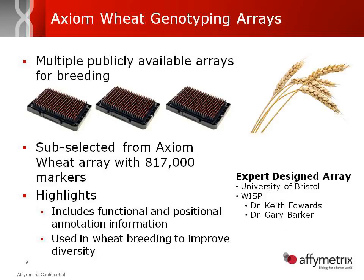The last array I want to talk about is the wheat array. There was a press release from Affymetrix with more details. This one was designed by the University of Bristol, and Dr. Parker will talk about it. It's an array with 817,000 markers. From this array, we will sub-select markers and take them into a high-throughput focused array with 384 arrays for breeding. These arrays will be available before the spring breeding season starts. Importantly, no array has ever been released with both functional and positional annotation information — and these arrays include both. This is key for breeding to improve diversity.